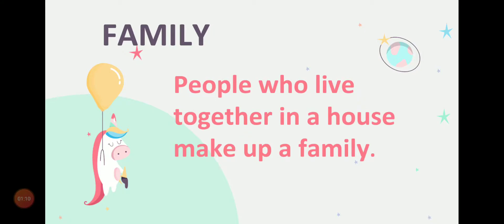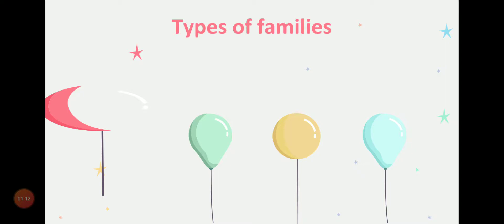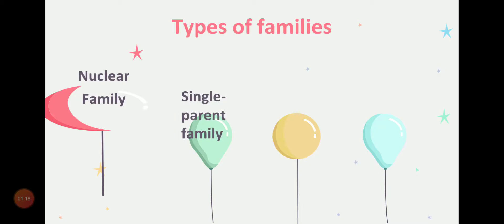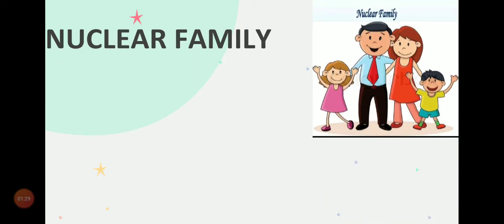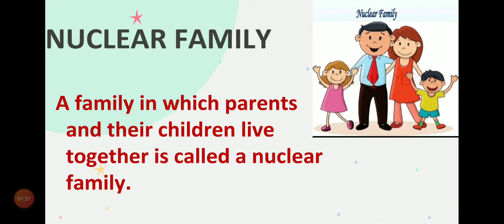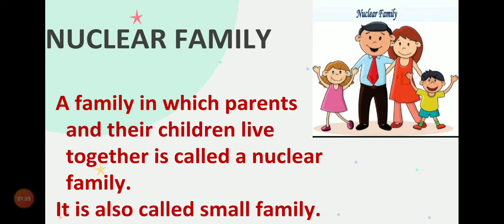Now, let us learn about different types of families: Nuclear family, Single parent family, Big family, Joint family. A nuclear family has mother, father and one or two children. Nuclear family is also called a small family.